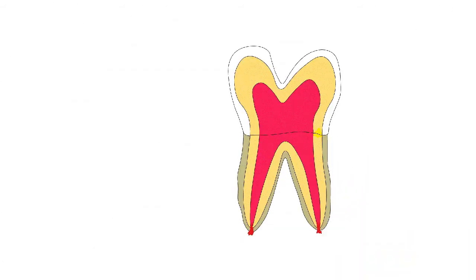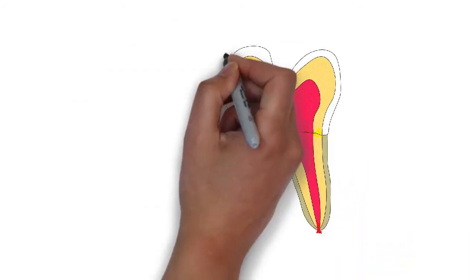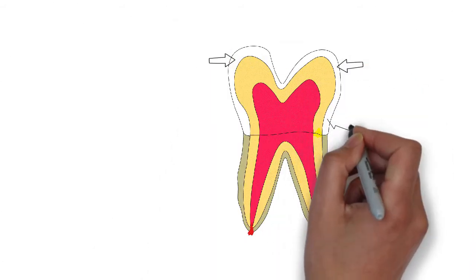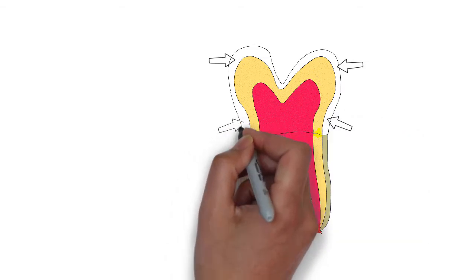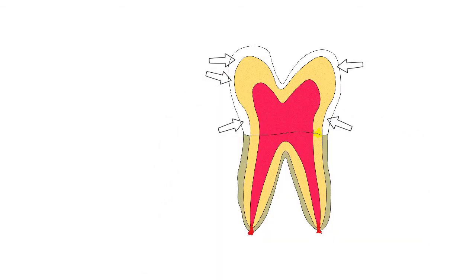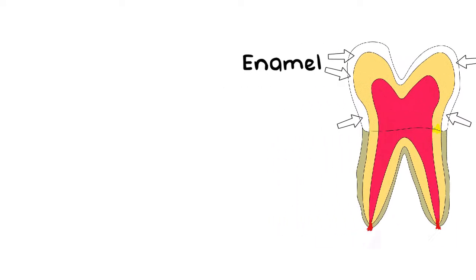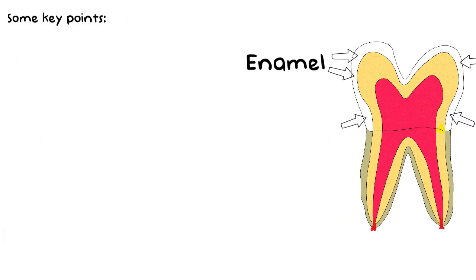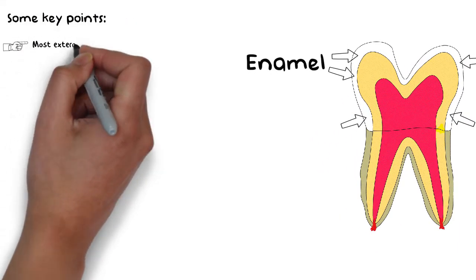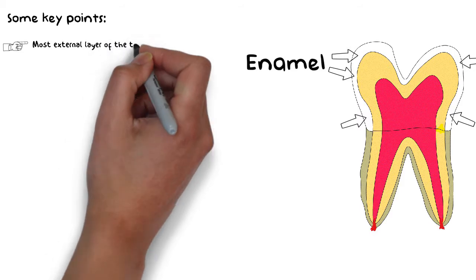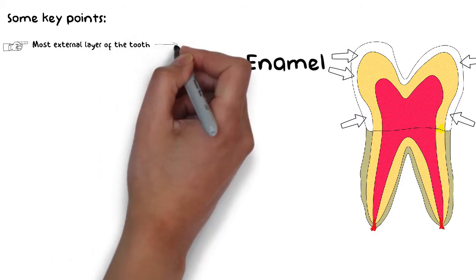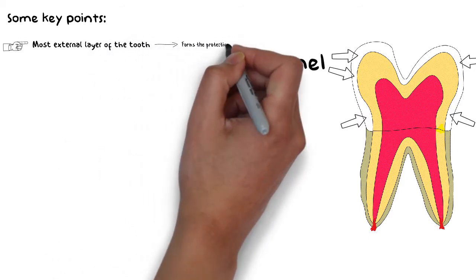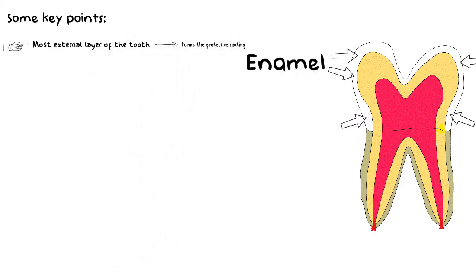Inside the tooth, there are three different layers. Let's start with the outermost layer, which is known as the enamel. Enamel basically covers the crown of the tooth and is the most external layer, hence forming the protective coating of the tooth. The enamel is what we see when we look at someone's teeth.